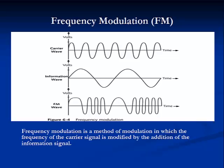Frequency modulation, or FM, is a method of modulation in which the frequency of the carrier signal is modified by the addition of the informational signal. Note that the frequency changes, but the amplitude and phase of the carrier wave remain constant. FM is used in microwave, cellular, mobile radio, and radio broadcasting services between 88 and 108 MHz. FM is preferred to AM primarily because it is more resistant to noise.